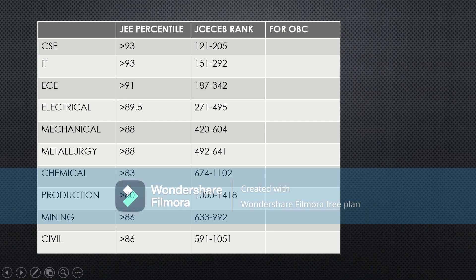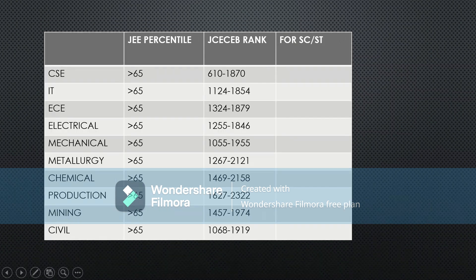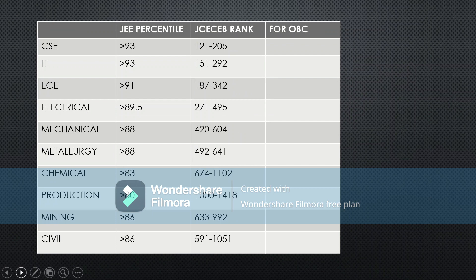Now coming to OBC — this is the OBC cutoff. Greater than 93 percentile will guarantee you a seat in CSE and IT for OBC candidates. For EC, you need around 91 percentile, and for other branches like production, civil, and mining, 83 to 88 percentile is more than enough.